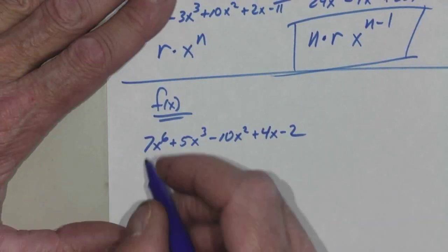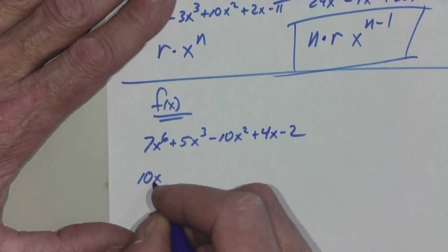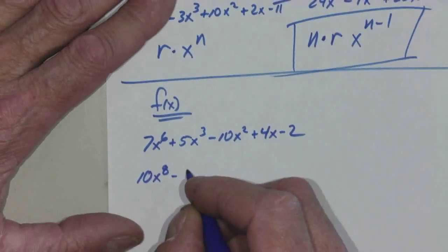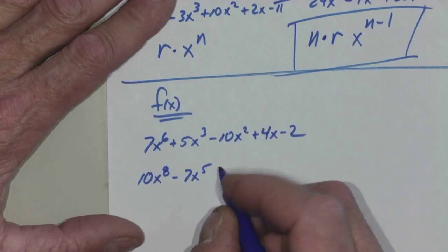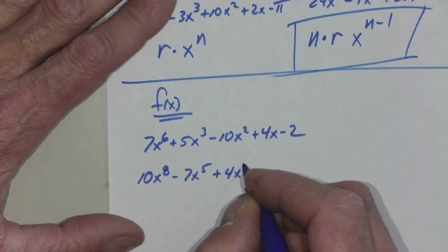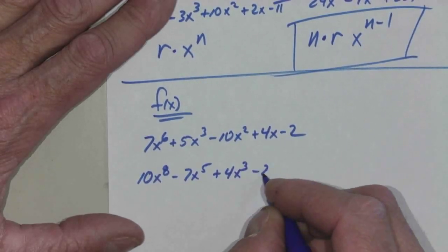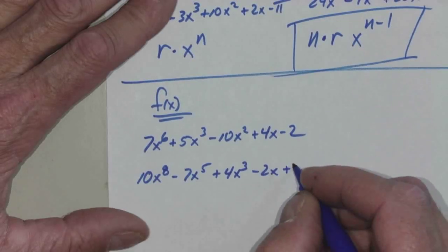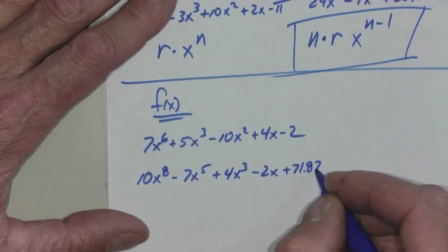Next one. 10 X to the eighth minus seven X to the fifth plus four X to the third minus two X plus 71.874.